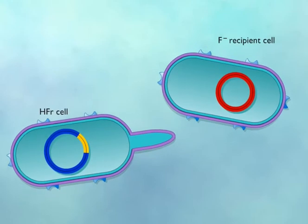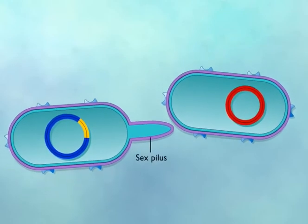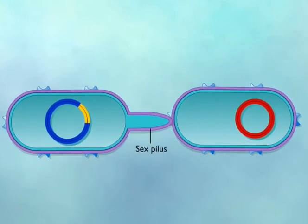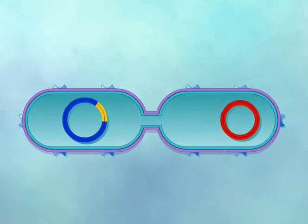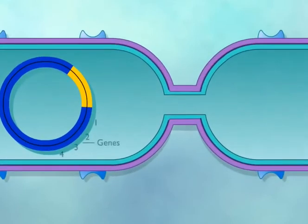The sex pilus contacts the recipient F-minus cell and pulls the cells together. The donor chromosome is transferred as single-stranded DNA starting at the origin of transfer.